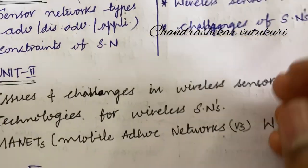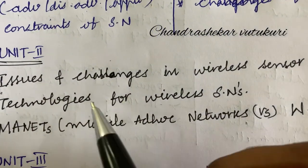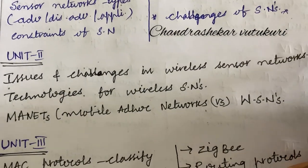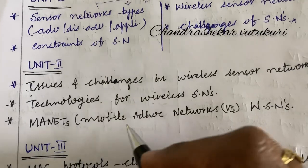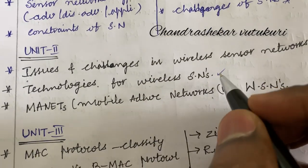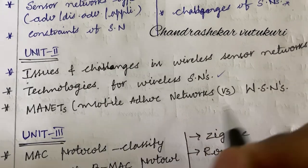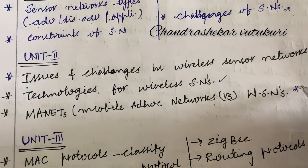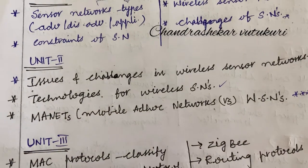Moving to Unit 2: issues and challenges in wireless sensor networks is a top question and a definite one this time. Technologies for wireless sensor networks and mobile ad hoc networks versus wireless sensor networks is also a top question — you may get a direct 10-mark question from this topic.